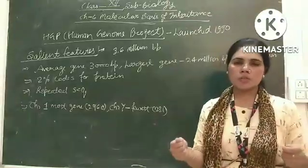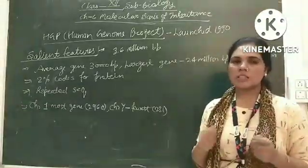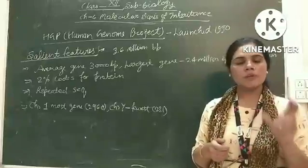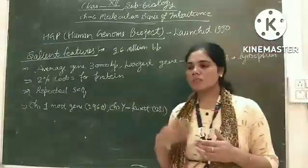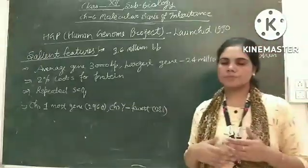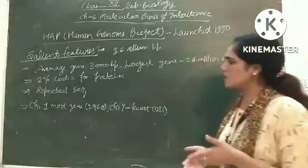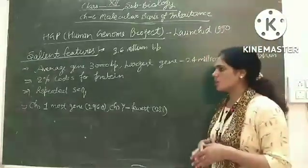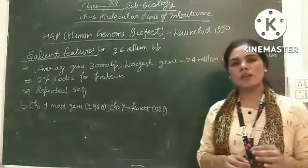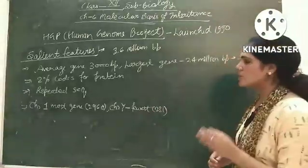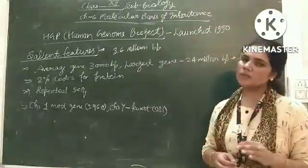In the complete human genome, there are many repeated sequences. Only one sequence codes for protein; the other repeated sequences do not code for protein — only 2% of DNA codes for protein. Chromosome 1 is the largest chromosome, which consists of 2,968 genes.